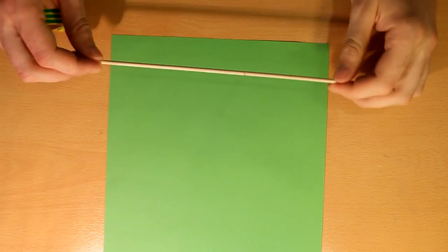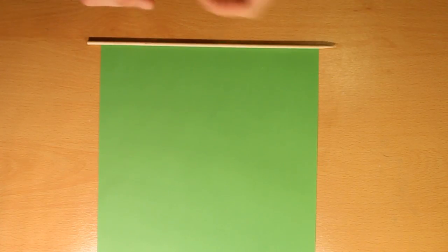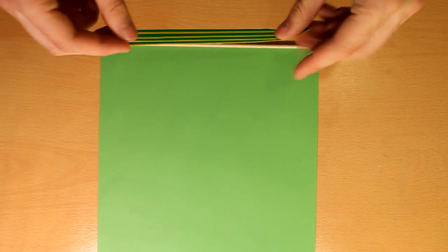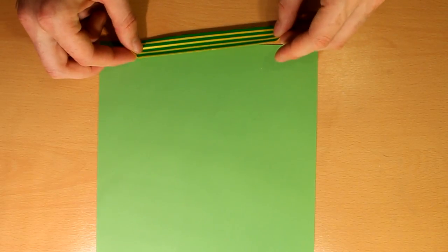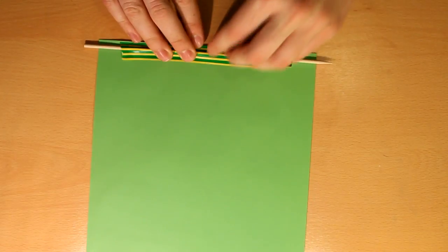The first thing you're going to do is tape one of the sticks to the end of the paper. Grab the tape and tape the stick like that parallel to the end of the paper.